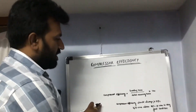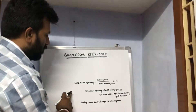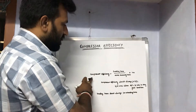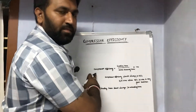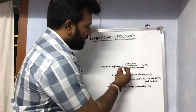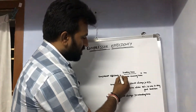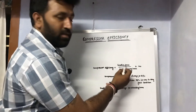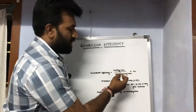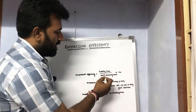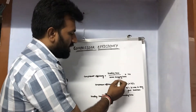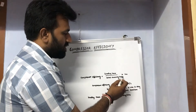Here, I have shown how compressor efficiency is calculated. Compressor efficiency means we need to calculate: the formula is loading hours divided by total running hours, multiplied by 100. Loading hours means how many hours loading is taking place, and total running hours means the total running hours of the system, into 100.